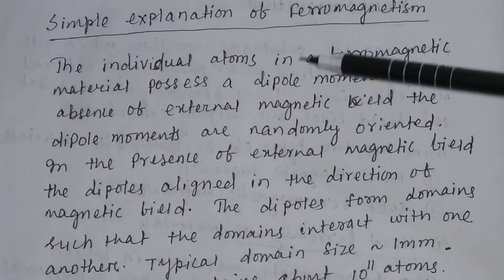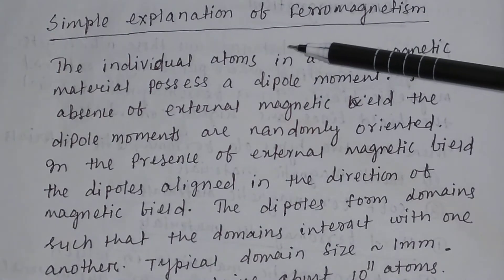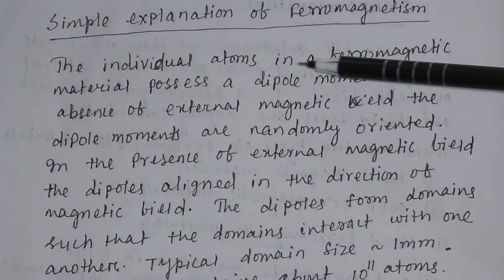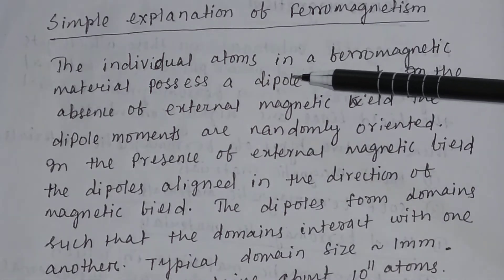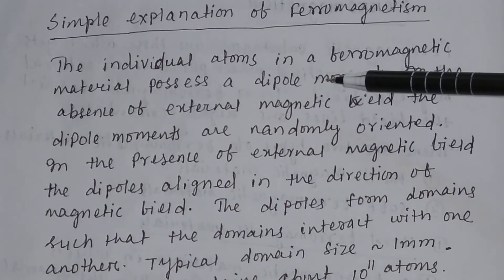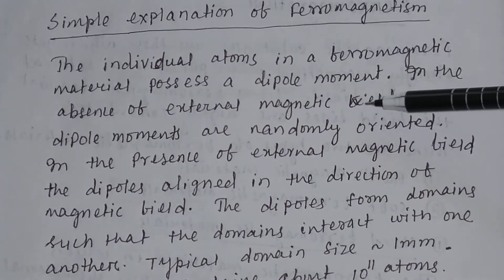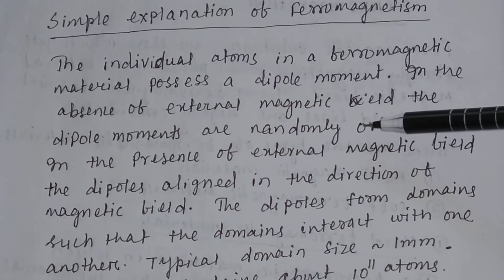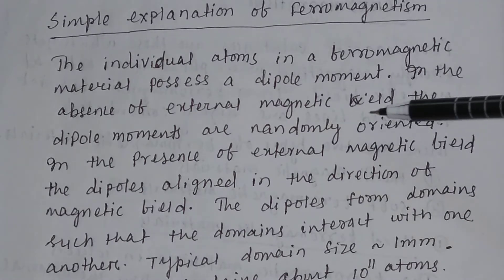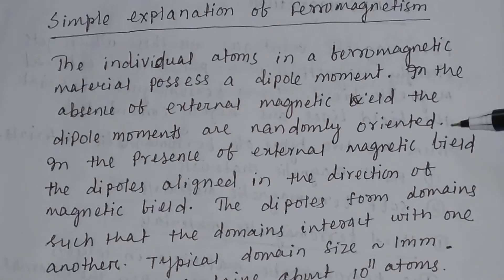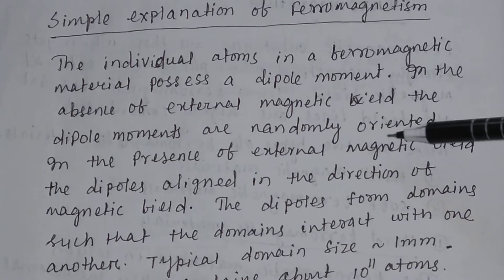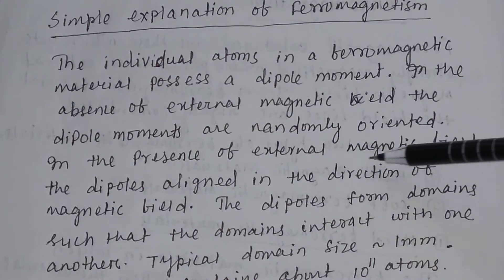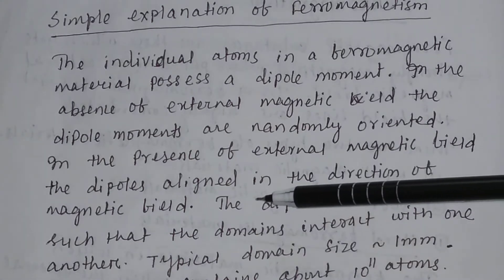Now let us discuss the simple explanation about ferromagnetism. The individual atoms in a ferromagnetic material possess a dipole moment. In the absence of an external magnetic field, the dipole moments are randomly oriented. In the presence of an external magnetic field, the dipoles align in the direction of the magnetic field.